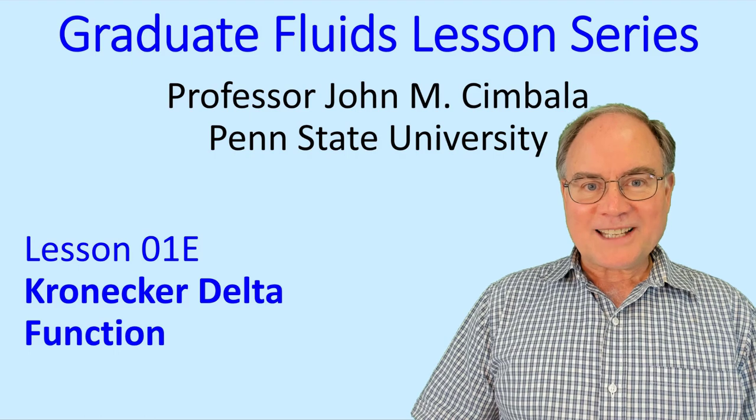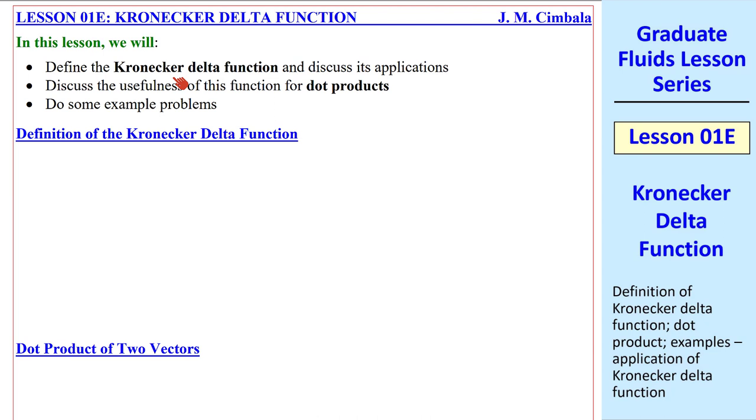Welcome to Lesson 1e, Kronecker Delta Function. In this lesson, we define the Kronecker Delta Function, and we'll discuss some of its applications. It's especially useful for doing dot products. We use the symbol delta, and delta ij is defined as 0 if i does not equal j, and delta ij equal 1 if i equal j.